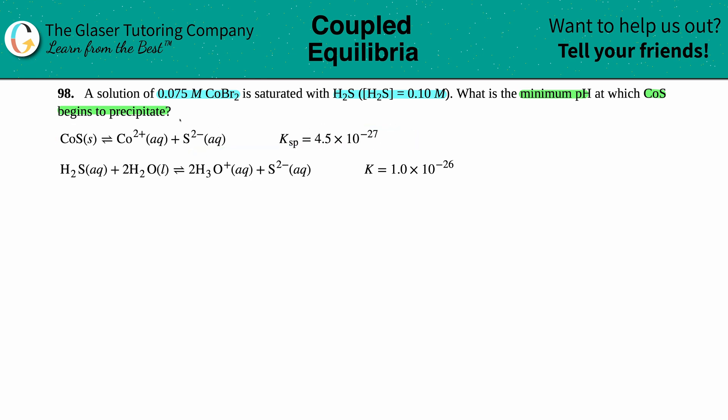They give us the Ksp for the CoS and then a Ka expression for H2S. So what are we going to do here? The question asks what is the minimum pH at which CoS begins to precipitate. In order to find that pH, I first have to find out what is the value at which CoS is going to precipitate.